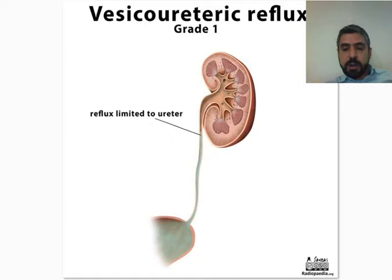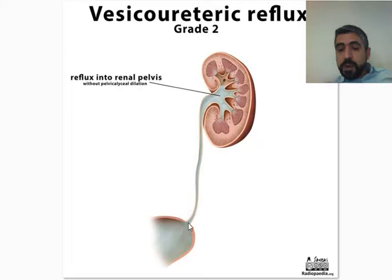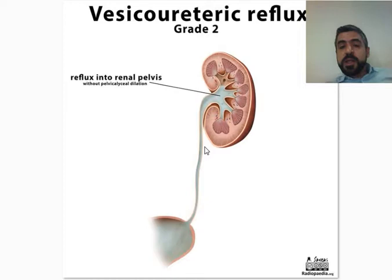Regarding Grade 2, the urine goes back all the way into the urinary bladder and fills the pelvicalyceal system, but there is no hydronephrosis — no dilatation of the renal pelvis or the renal calyces. This is a Grade 2 Vesico-Ureteric Reflux.